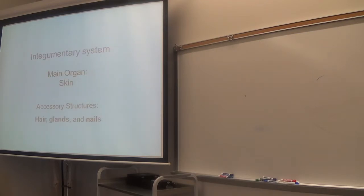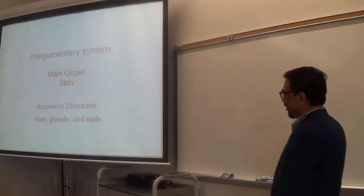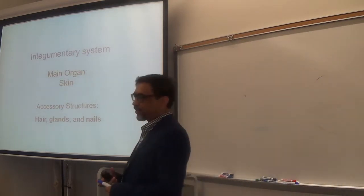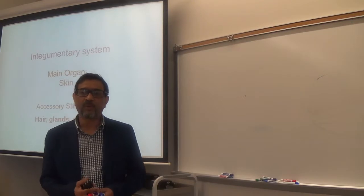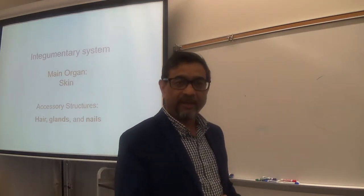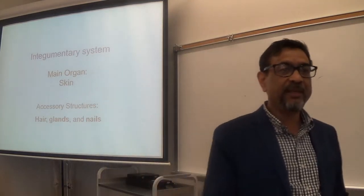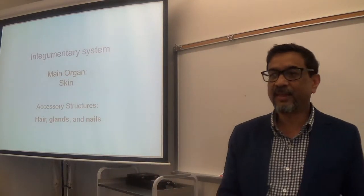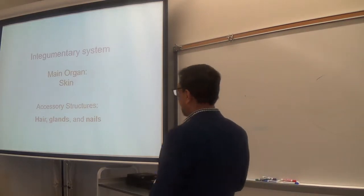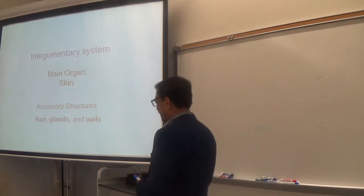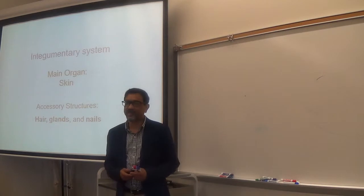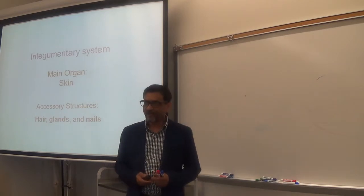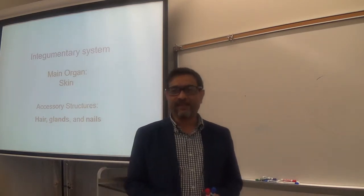The main organ or part of the Integumentary System is the skin. Accessory structures include the hair, nails, and glands of the skin — that means sweat and sebaceous glands.